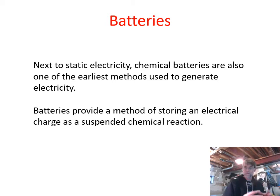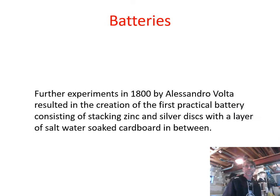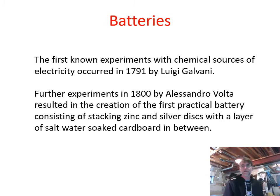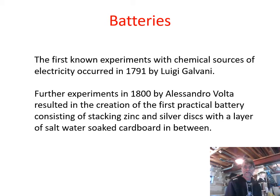Batteries provide a method of storing an electrical charge as a suspended chemical reaction. We put the appropriate materials in place, providing the opportunity for a chemical reaction. Once we use the battery, that chemical reaction creates the voltage. The first known experiments with chemical sources — Luigi Galvani in 1791, followed by Alessandro Volta in 1800 — resulted in the creation of the first practical battery. That's where we get the term 'volts.'